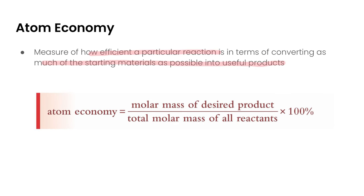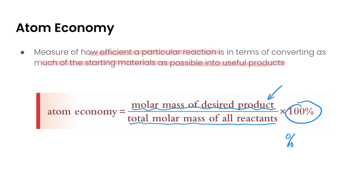Atom economy is a very simple calculation. It is taken as the molar mass of the desired products — what you are trying to make — divided by the total molar mass of all the reactants, then multiplied by 100 to give a percentage. A higher atom economy value means a more efficient process.